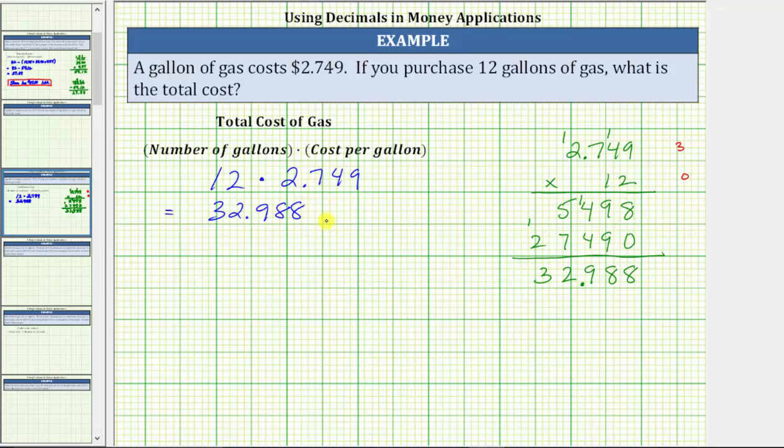But this is dollars and it's common to round to the nearest cent. So let's go ahead and do that. To the nearest cent, we would round this to the hundredths place value. This eight is in the hundredths place value.